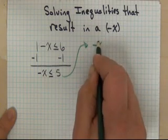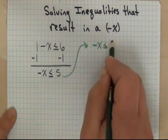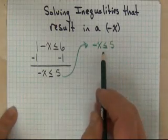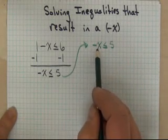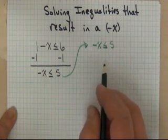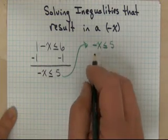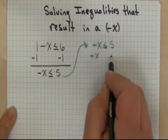So right now I've got negative x or the opposite of x is less than or equal to 5. So we talked about one way to get this to be positive is to multiply or divide both sides by negative 1. Another option I have for getting or ending with a positive x is simply to add x to both sides. So I'm going to do that.